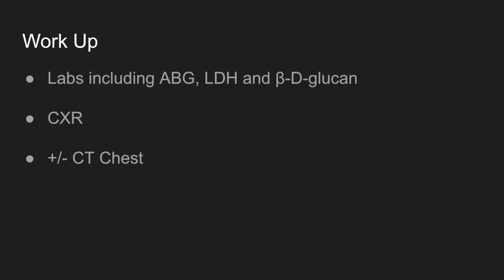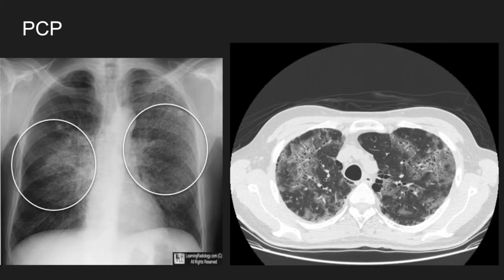We also want imaging. In a patient with PCP, the most common chest x-ray findings are diffuse bilateral interstitial infiltrates, sometimes seen as bat-winging. The chest x-ray can be normal in up to a quarter of patients with PCP pneumonia. On CT, we would expect ground-glass opacities.